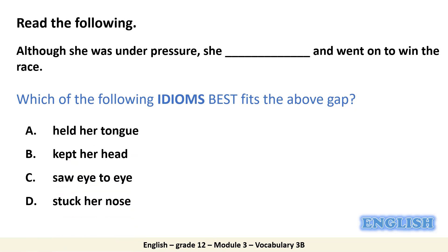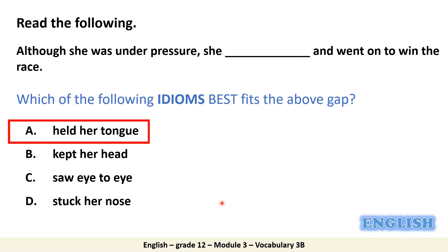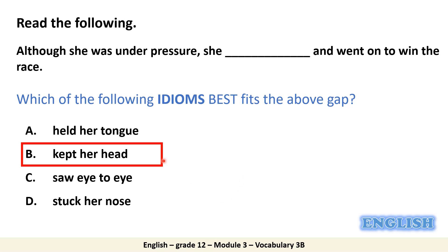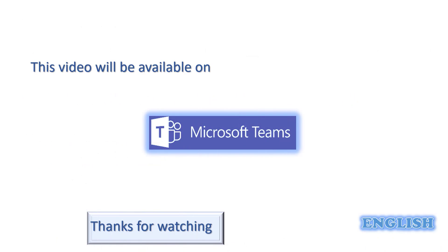I have one last question for you. Read the sentence and choose the idiom to fill in the space: although she was under pressure, she went on to win the race — she managed to keep her head, she was able to stay calm and win. This is the end of today's vocabulary lesson. Thanks for watching, and remember this video will always be available on Microsoft Teams for you to watch at any time.